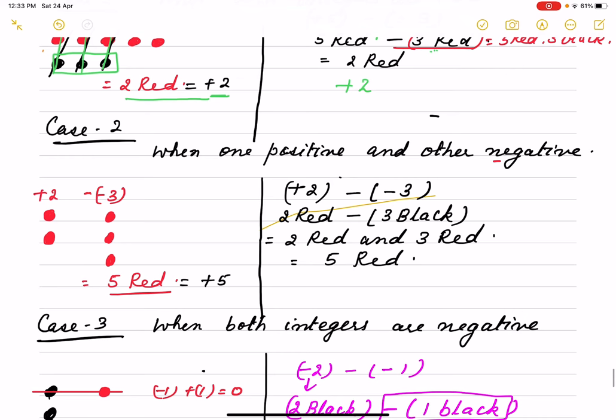Case 2 is when one positive, first one is positive, other is negative. So plus 2 and minus 3. This one is positive, this one is negative. This one is red, this one is black. Minus means black color. Now which sign is there in between? Minus sign, means opposite of 3 black. Means that means it is 3 red. If you take opposite of 3 black, that means I will take 3 red also. Here already 2 reds are there, that means all together we have how many red color bindi? The 5 red color, or square paper is 5 red color. Here also 5 red plus 5.